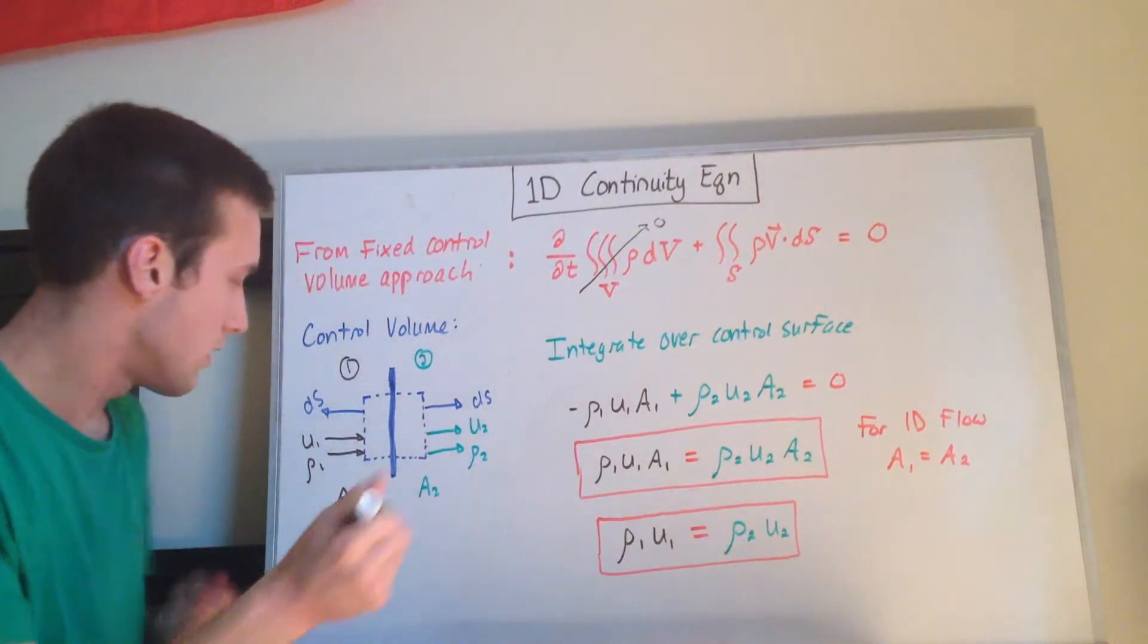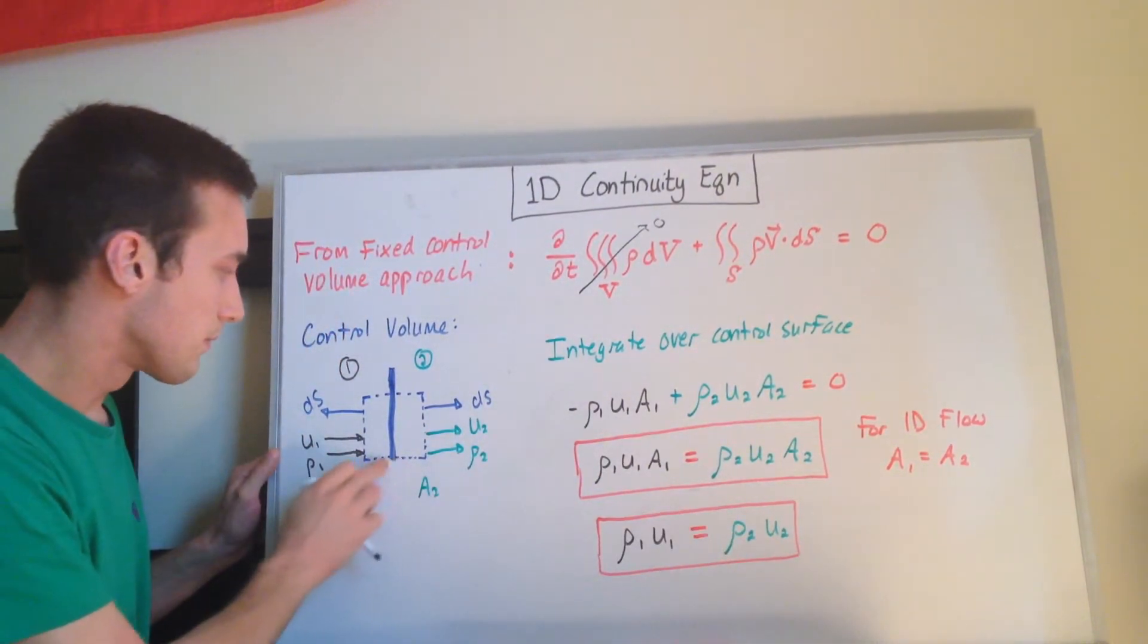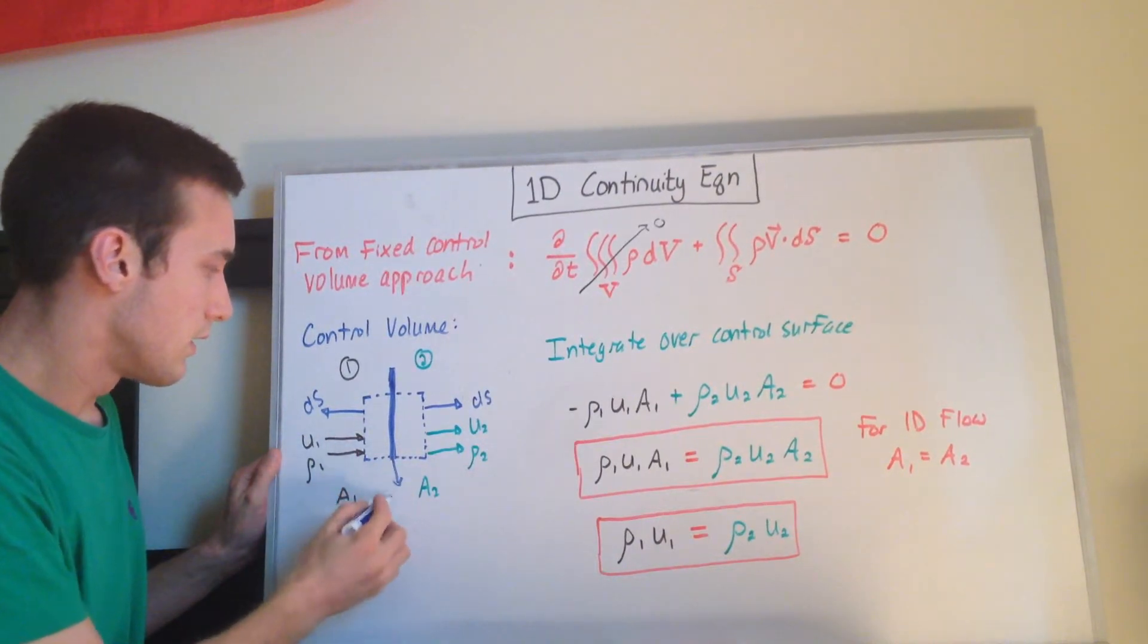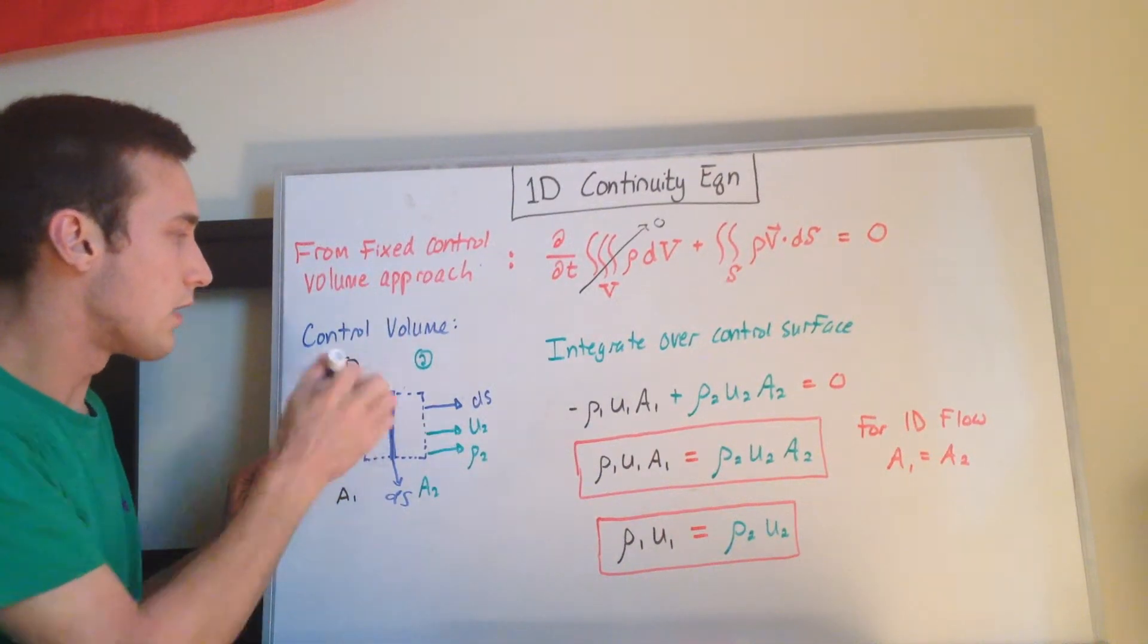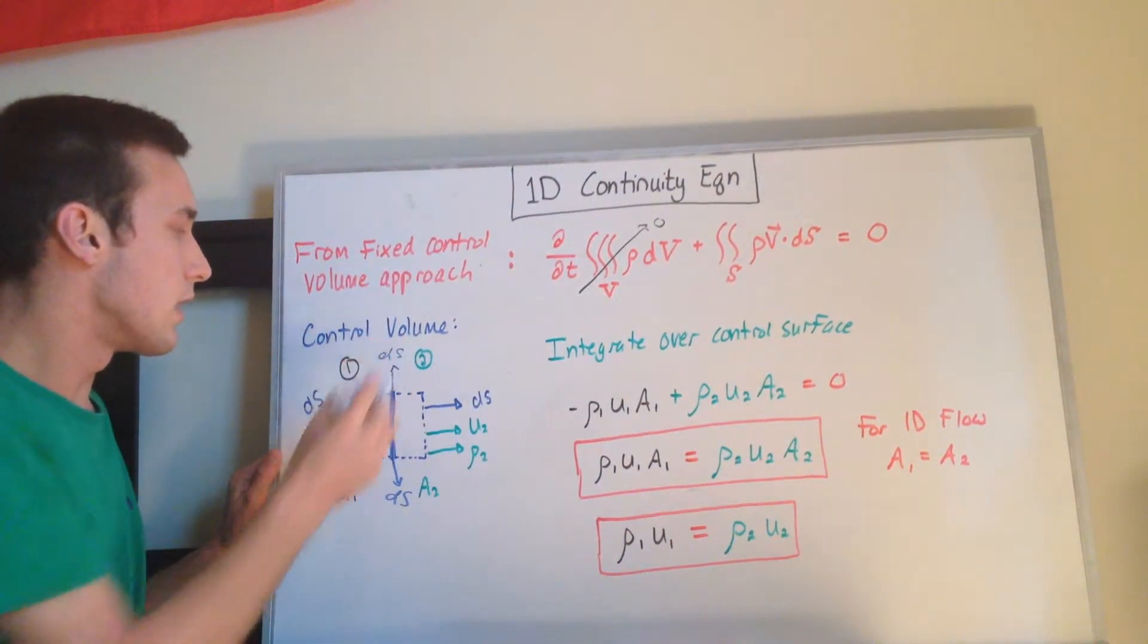And what's happening is, this board doesn't fall down when I draw this, is that the ds is pointed down that way, because it's out of the control volume, and this ds is pointed up.